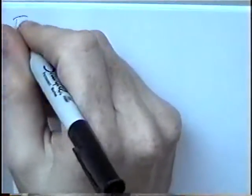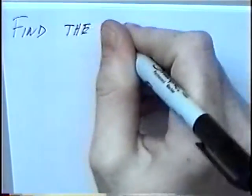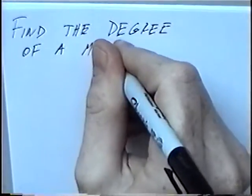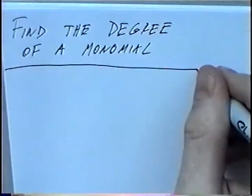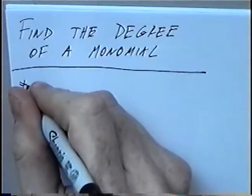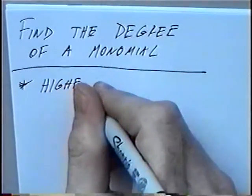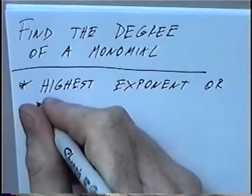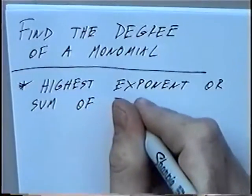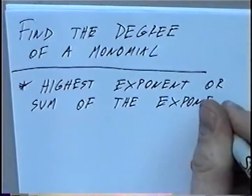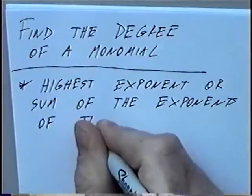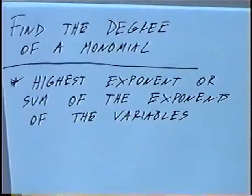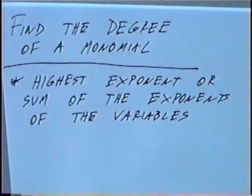The title of the first section is: find the degree of a monomial. The degree is the highest exponent, or sum of the exponents of the variables. For these questions, the degree will either be the highest exponent, or if we have more than one variable, we can take the sum — add the exponents together.